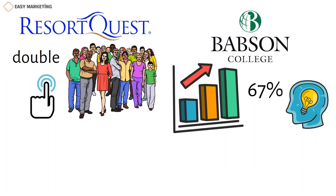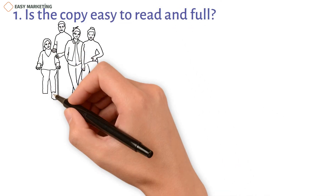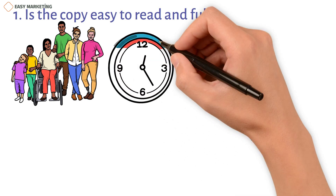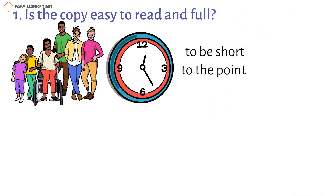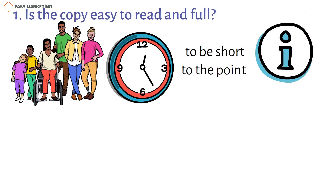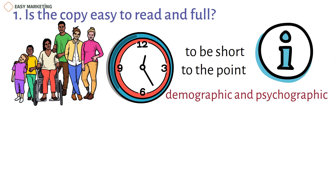If your display ad campaign isn't giving you the results you want, think about the following. First, is the copy easy to read? Most people who see your ads won't have much time or attention to spare. Your ad needs to be short and to the point because they are already taking in a lot of information. Display ads let you target certain demographic and psychographic types of users, so you should be careful about how you word them.